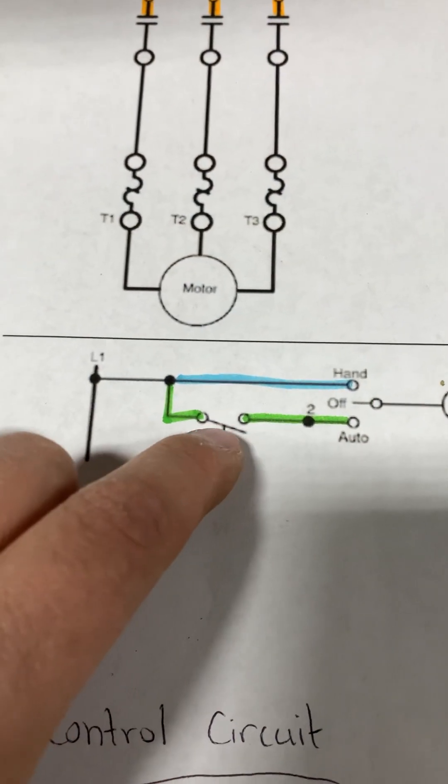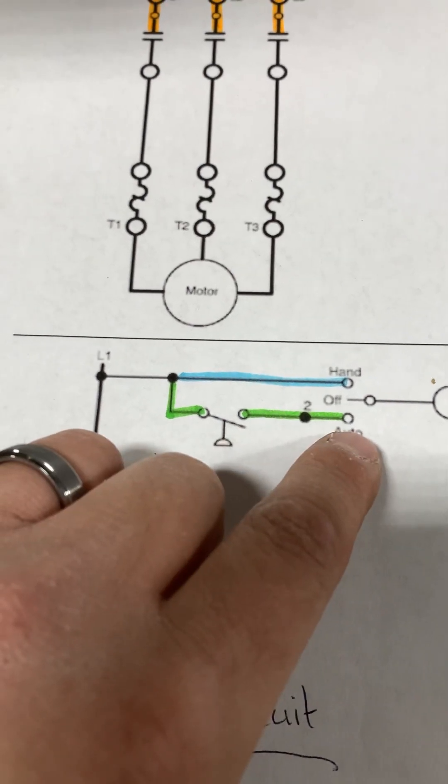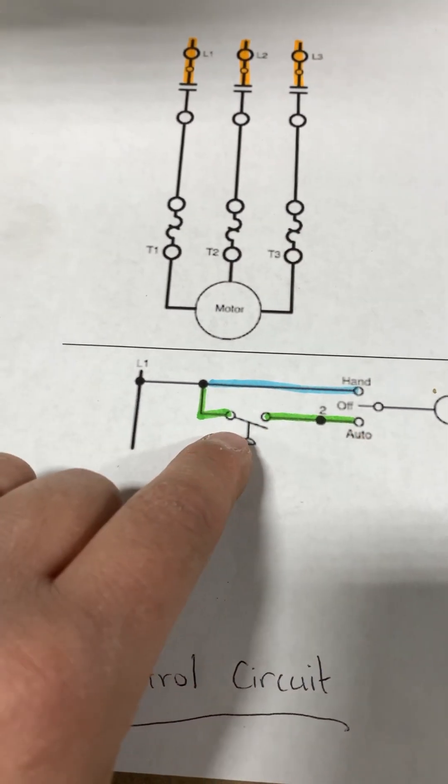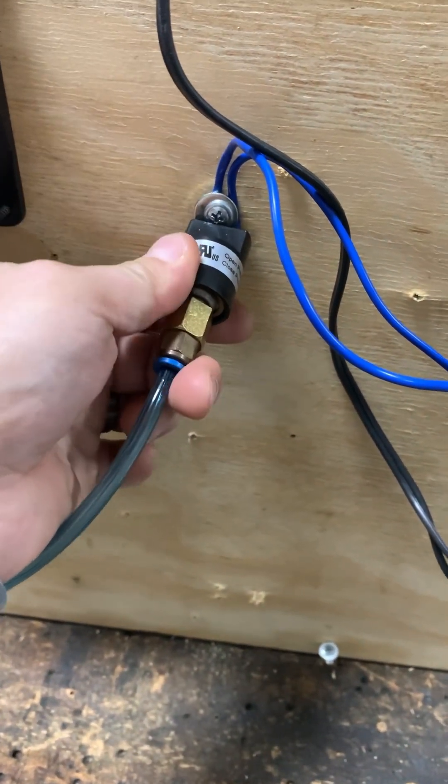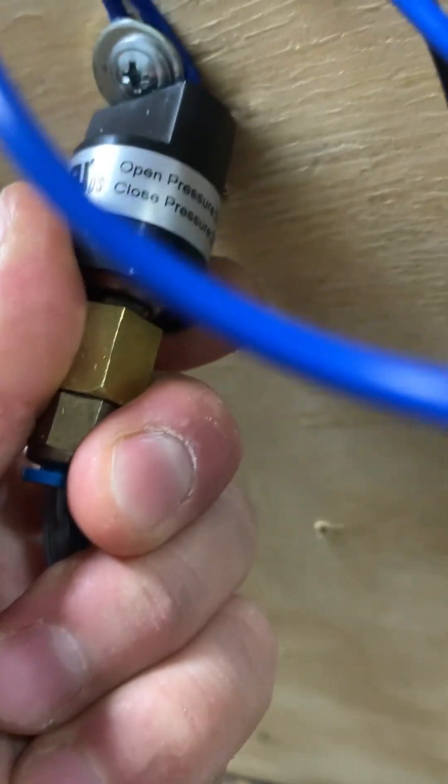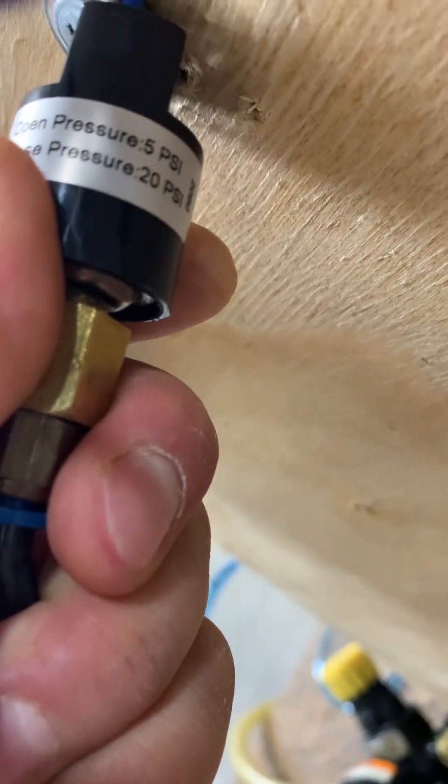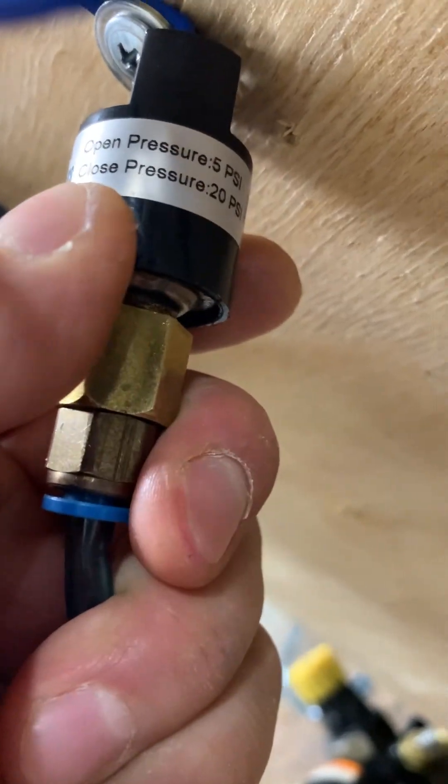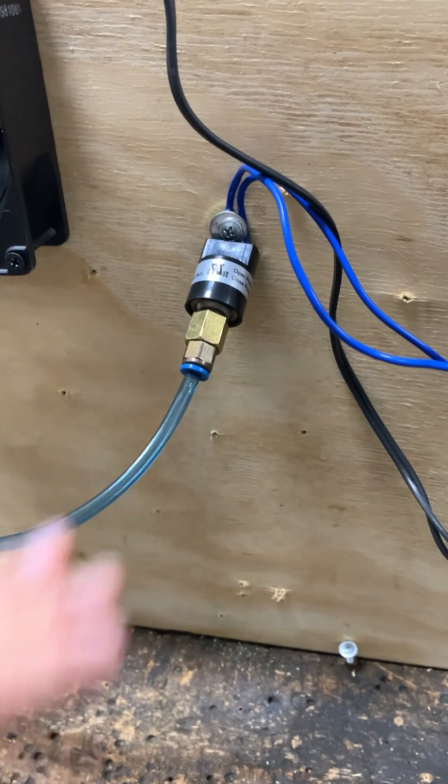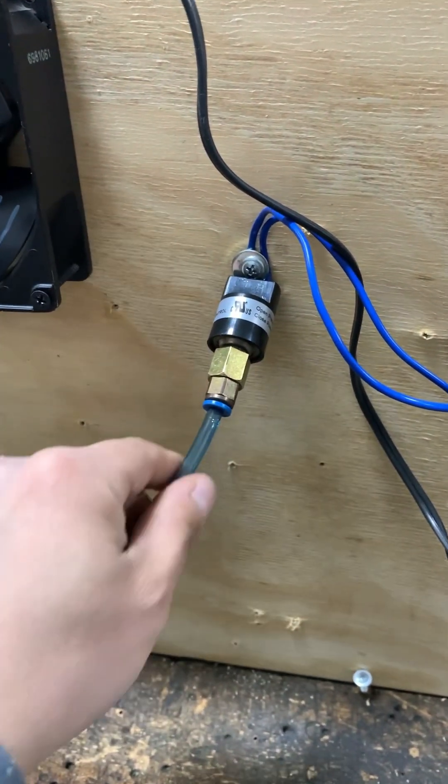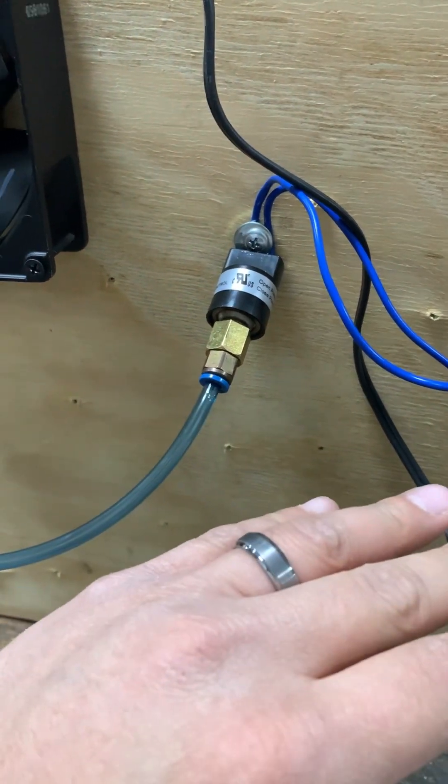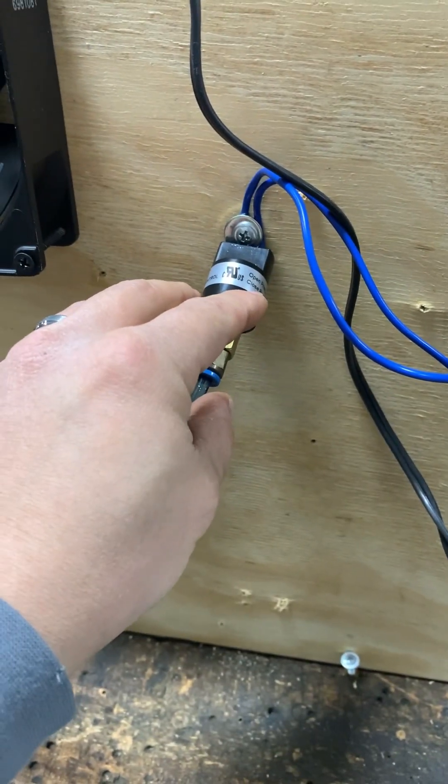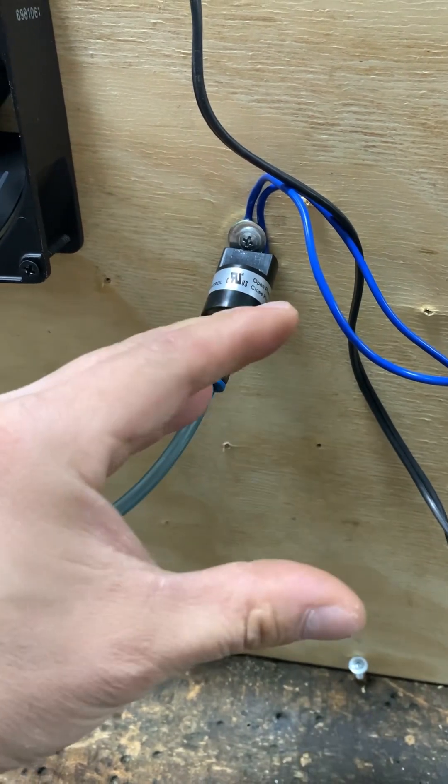And then just a pressure switch in series to our auto position on our selector switch. And this is the pressure switch that we are using. This pressure switch is going to open at around 5 psi and it closes at 20 psi. So at 5 psi of pressure, if it detects that it drops to 5 psi, it is going to open up its contacts and if it goes above 20 psi, it's going to close the contacts.